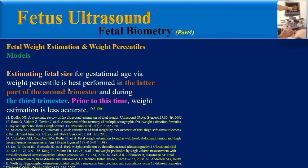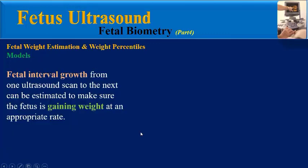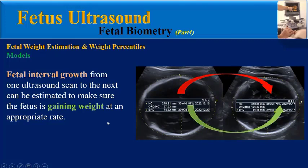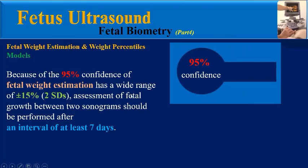According to many studies, estimating fetal weight for gestational age via weight percentile is best performed in the later part of the second trimester and during the third trimester; prior to this time, estimation is less accurate. Fetal interval growth from one ultrasound scan to the next can be estimated to make sure the fetus is growing at an appropriate rate.